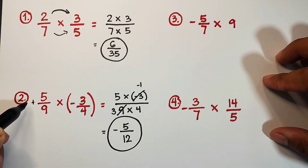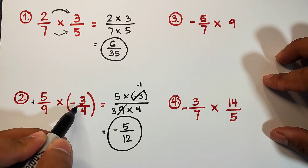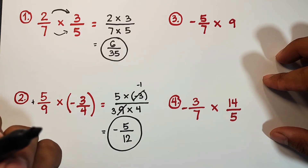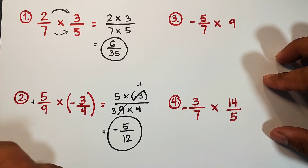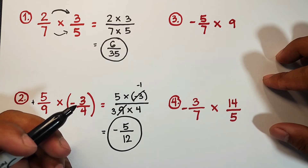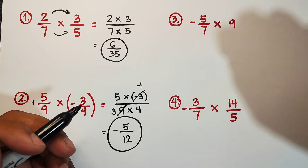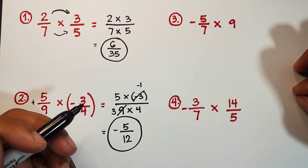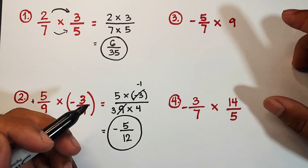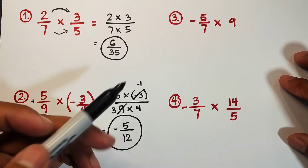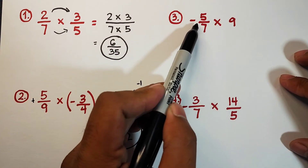This answer is negative because we are multiplying a positive rational number by a negative rational number. In integers, we have the rule that when you multiply two numbers with unlike signs, the product is automatically negative.